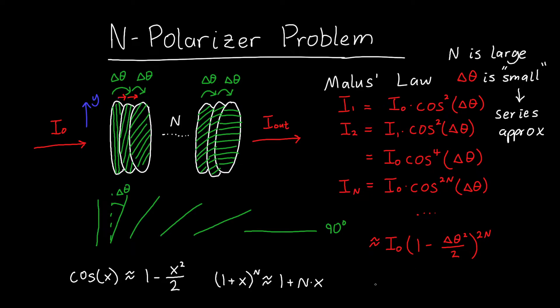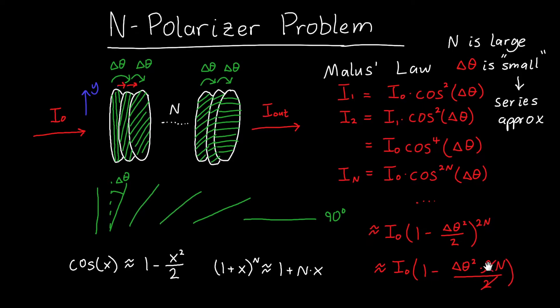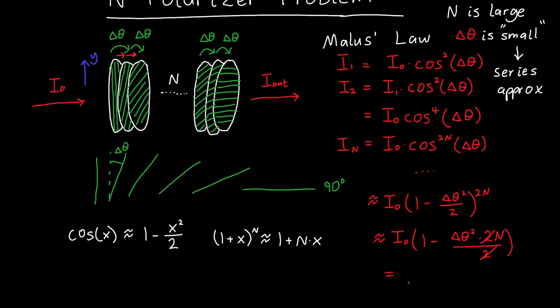That means that this whole mess becomes I₀ times (1 minus Δθ² over 2 times 2n). Here Δθ² over 2 is our x, and n is 2n, so Δθ² times 2n all over 2. The 2s cancel, so that's nice. This is just equal to I₀ times (1 minus n Δθ²).